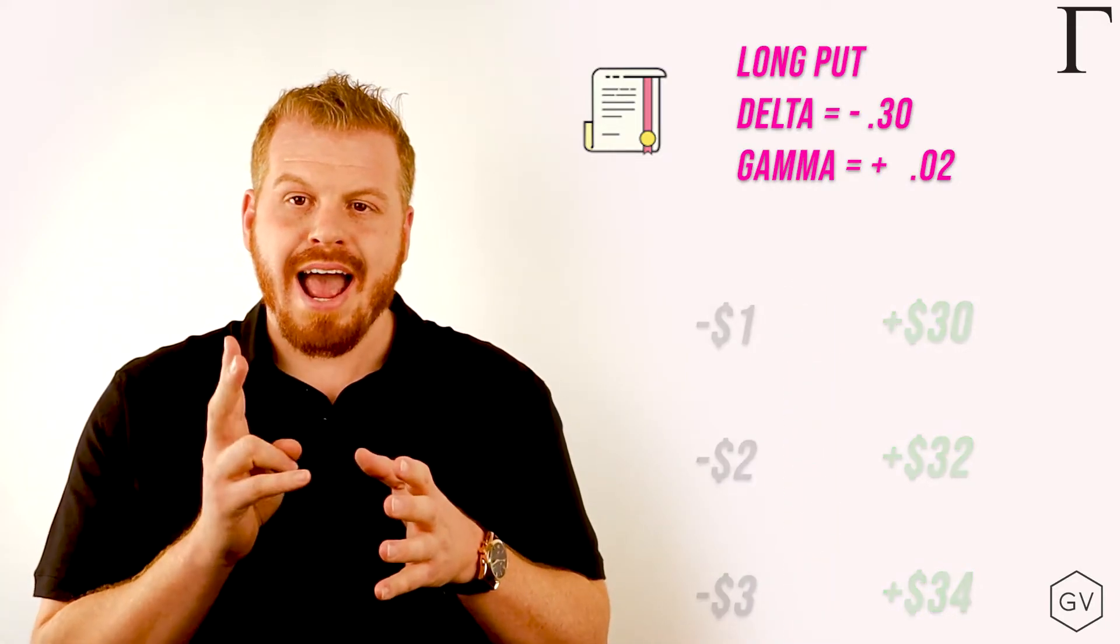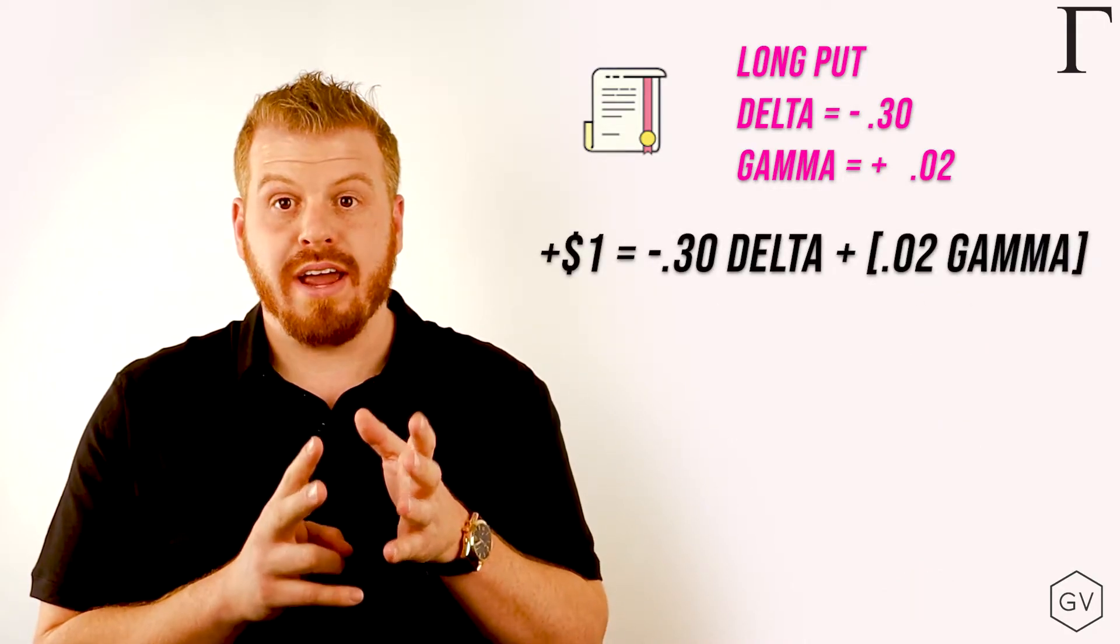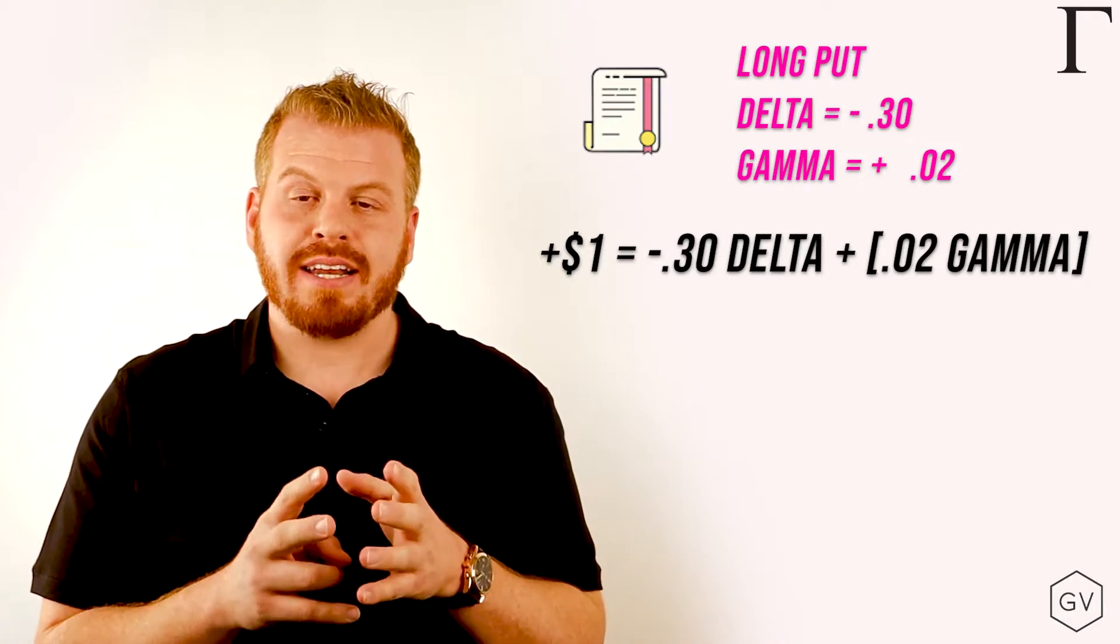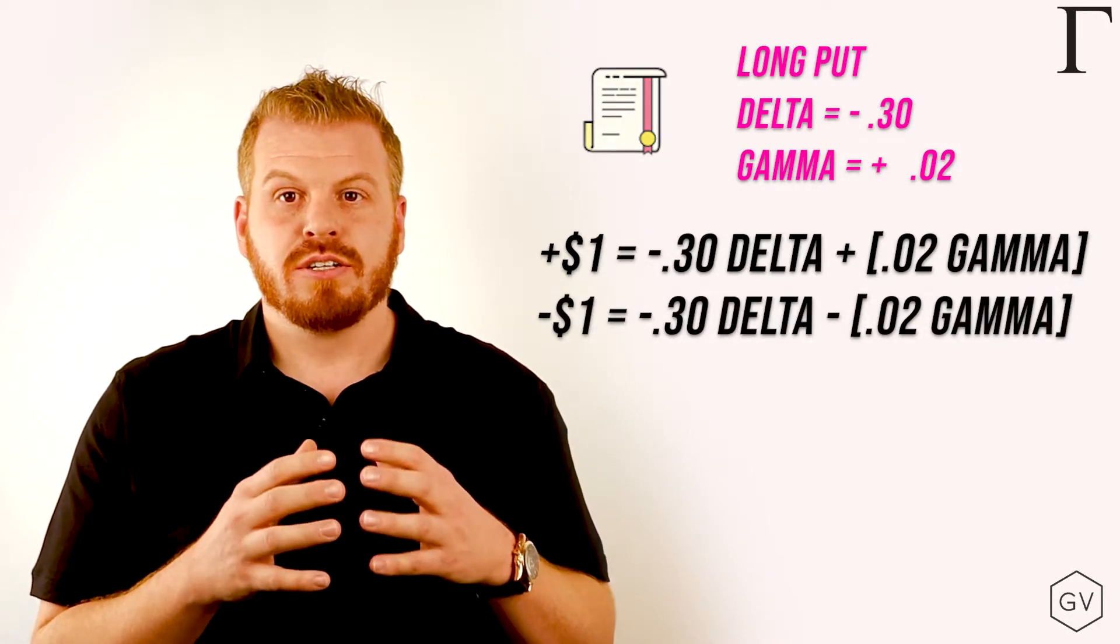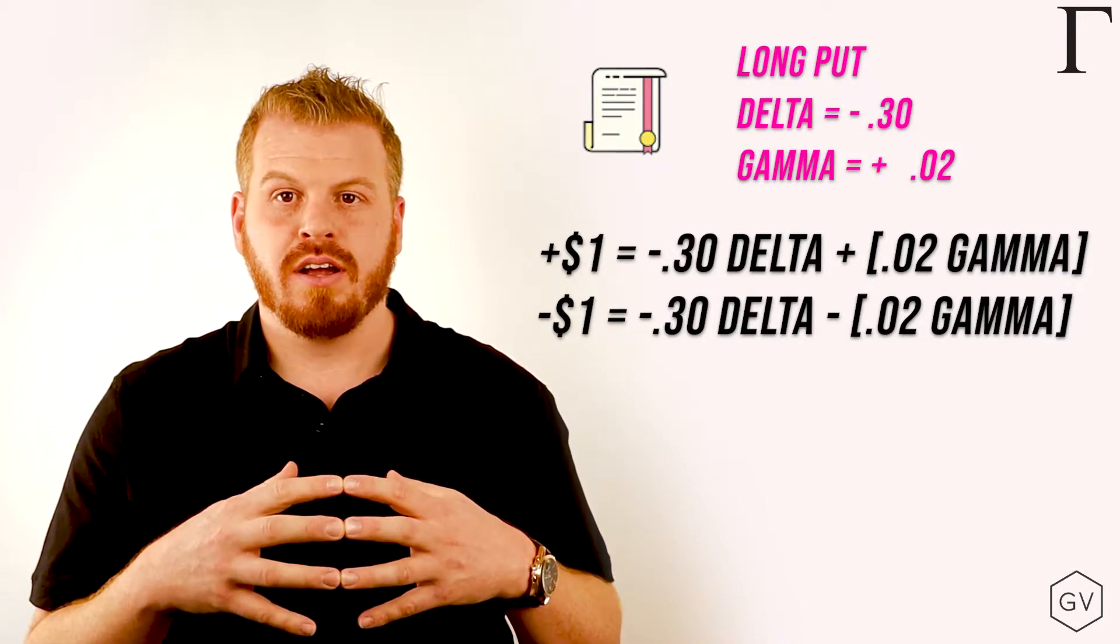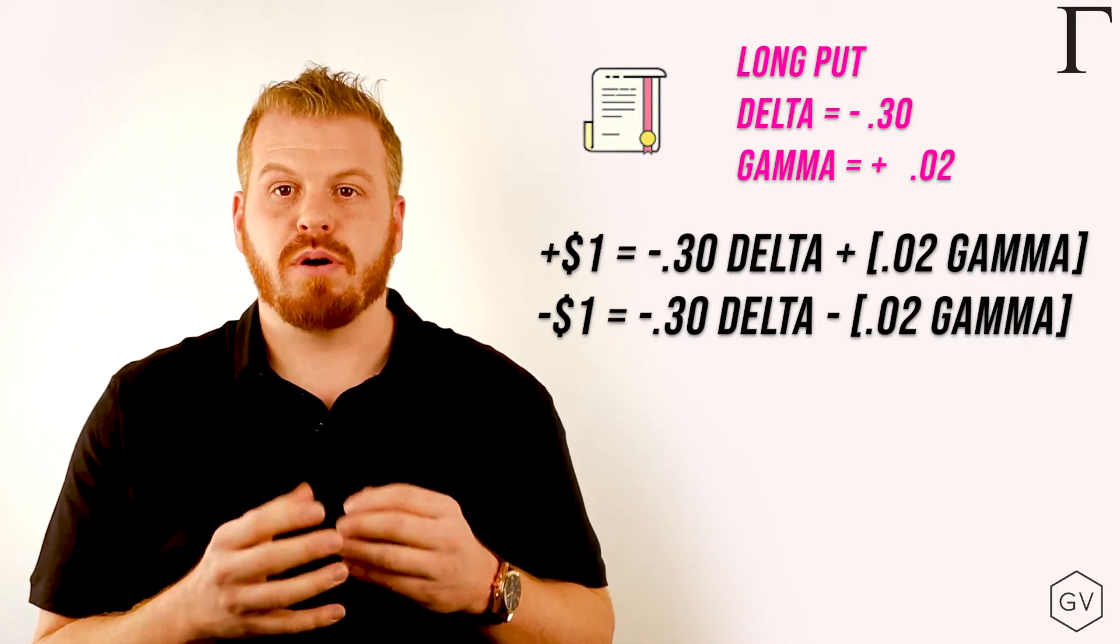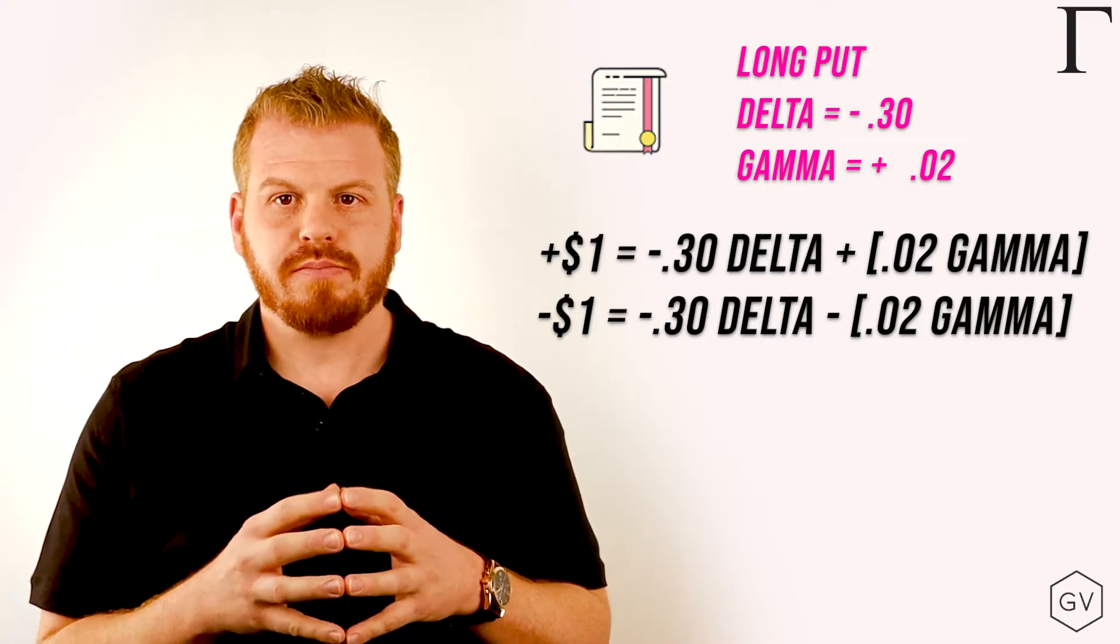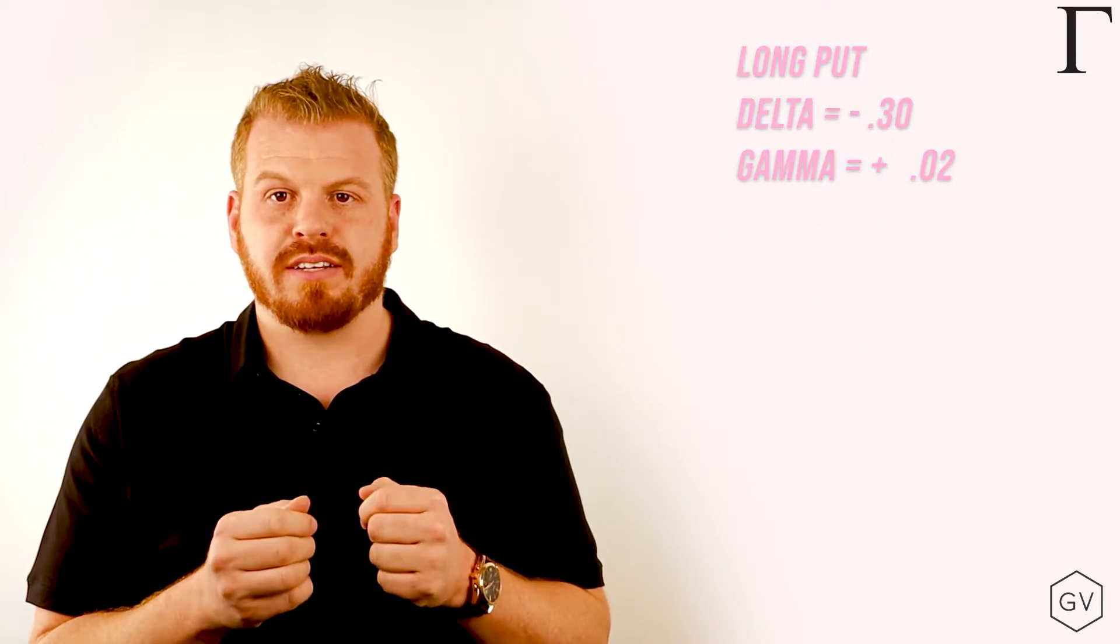You see, you're adding a positive gamma to a negative delta position on the way up, and then you're subtracting a positive gamma from a negative delta position on the way down. So again, you're getting more and more long as the position goes in your favor, and you're getting less and less long as the position goes against you, or less and less exposure as the position goes against you. That's why buying options is always favorable from a gamma perspective.